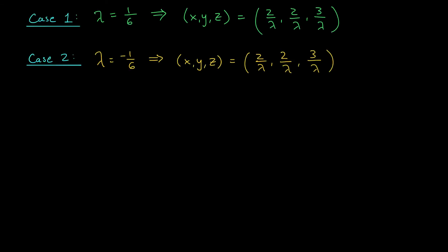Okay, we have 2 possibilities for lambda. Either lambda is 1 over 6 or lambda is minus 1 over 6. In either case, our extreme point x, y, z can be found using our formulas from the last slide. X is 2 over lambda, y is 2 over lambda, and z is 3 over lambda. So when lambda is 1 over 6, our extreme point is 2 over 1/6, 2 over 1/6, 3 over 1/6, which gives us the point 12, 12, 18. If instead lambda is minus 1/6, well, then the only difference here is the sign. Our extreme point is minus 12, minus 12, minus 18.